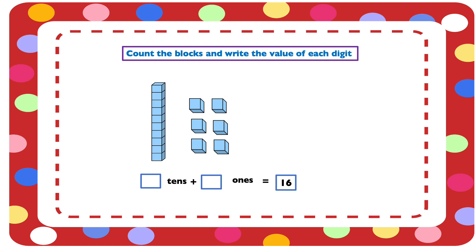1, that's 1 group of 10. And then we have 1, 2, 3, 4, 5, 6. So we have 1 ten and 6 ones. So the value of 1 is 1 ten and the value of 6 is 6 ones in 16.